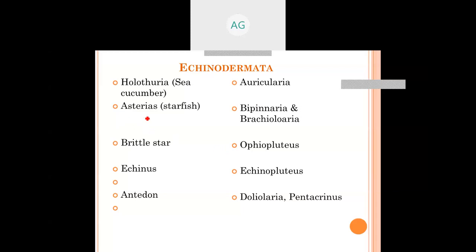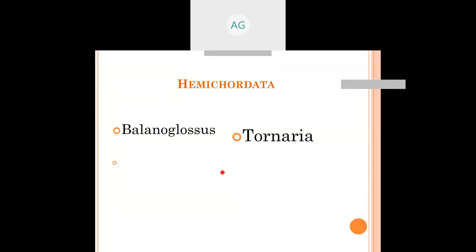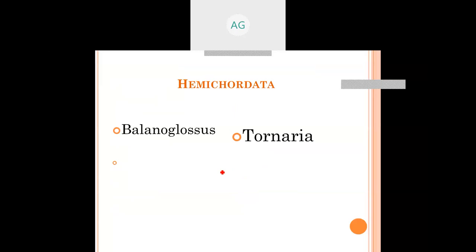In Echinodermata: in Holothurians, the larva is Oricularia; in Asteroidea (sea stars), the larva is Bipinnaria; in Brittle Star, it is Ophiopluteus; in Echinus, it is Echinopluteus. In Hemichordata — now included in invertebrate phyla — Balanoglossus has the Tornaria larva.